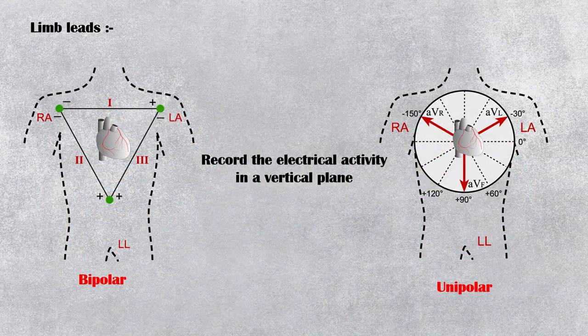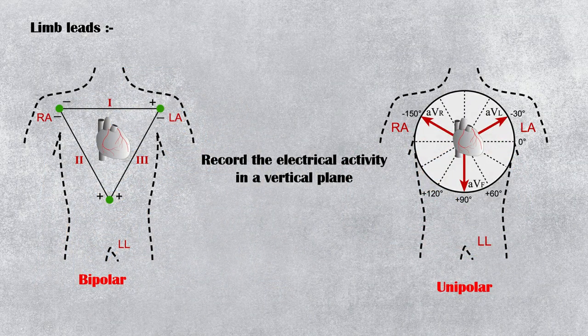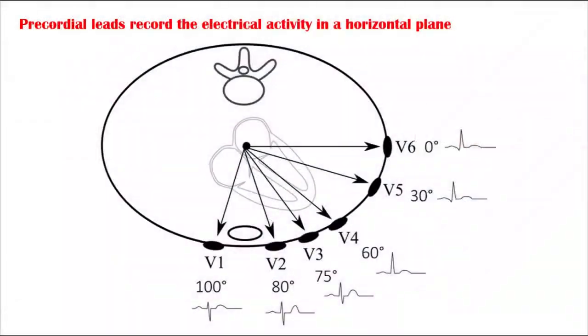The limb leads record the electrical activity in a vertical plane, and the precordial leads record the heart's electrical activity in the horizontal plane.